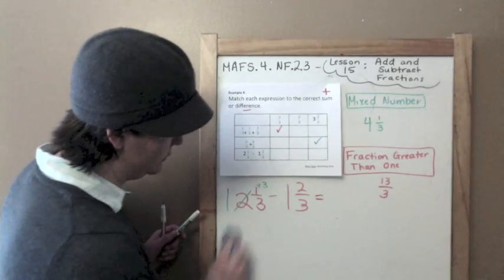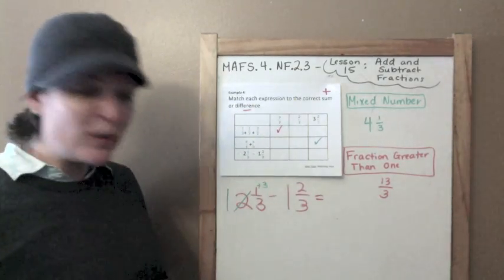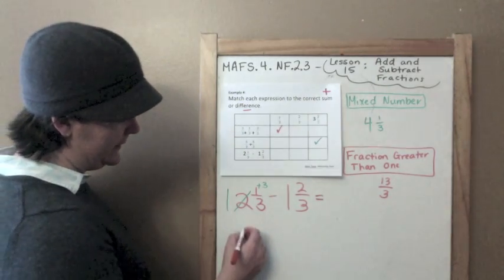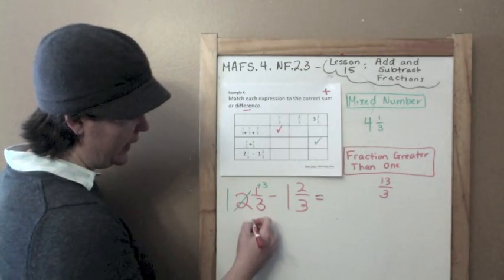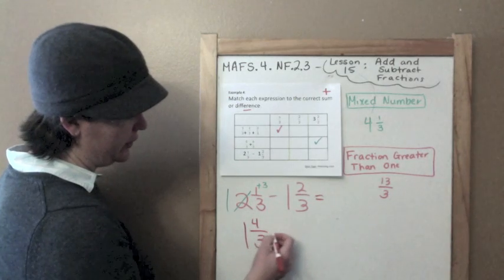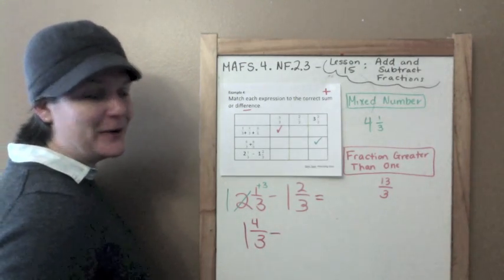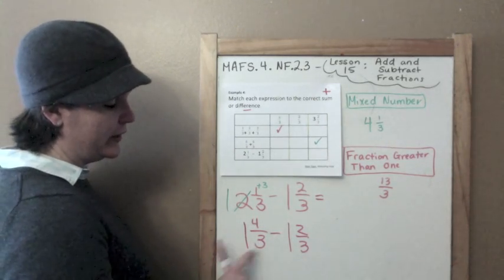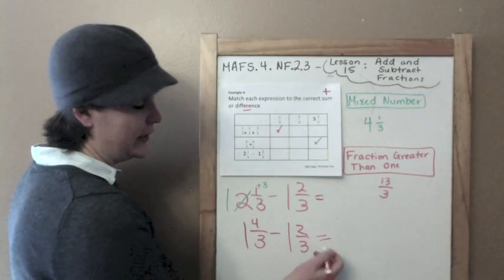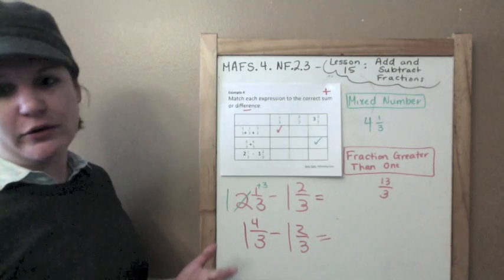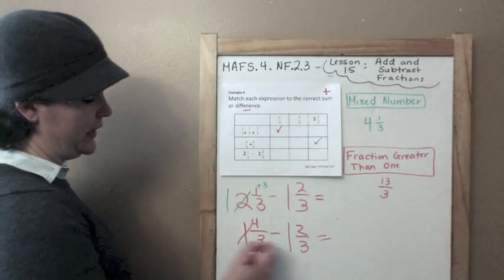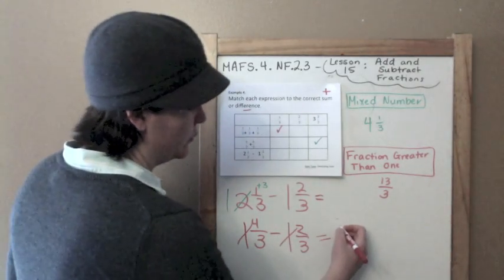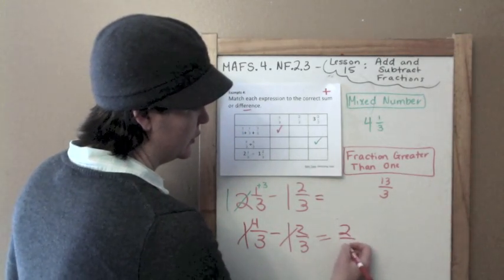Let me erase that so you can see what I'm doing. Let me rewrite this funky fraction now. This would be one and four-thirds minus one and two-thirds. One minus one equals zero — I can actually cancel them out. So now we have four-thirds minus two-thirds, which would be two-thirds.